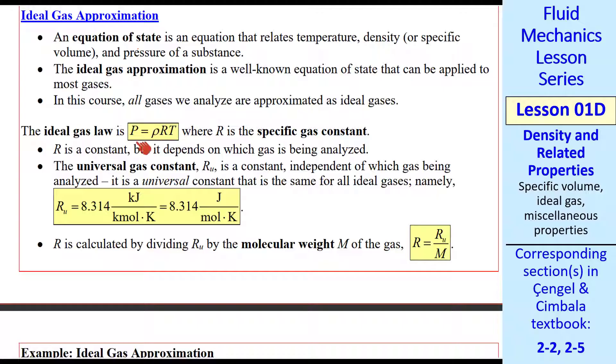Here's the famous ideal gas law in the form preferred by fluid mechanicians, p equals rho RT. R is the specific gas constant. It's a constant for a specific gas, but it depends on which gas is being analyzed. There is a universal gas constant, Ru. This constant is independent of which gas is being analyzed. It's universal.